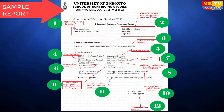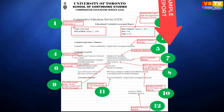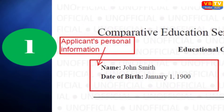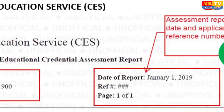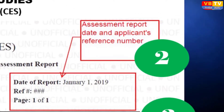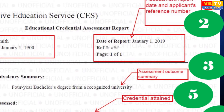This is the Comparative Education Services Educational Credential Assessment Report. This is a sample report to understand what it means. Here your name and date of birth are given, while on the right side the assessment report date and your reference number are given. Just below is the Canadian Equivalency Summary, where the credential in the present example is a four-year bachelor degree from a recognized university. This is the outcome summary of the assessment.